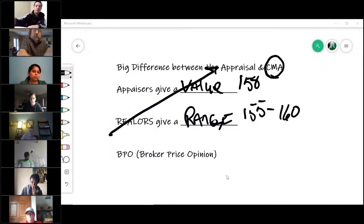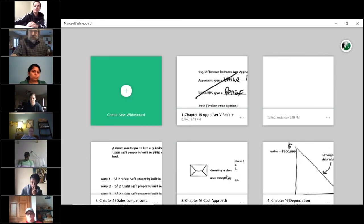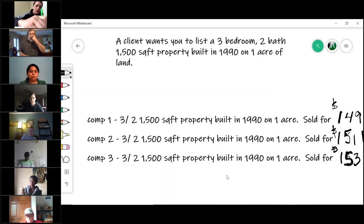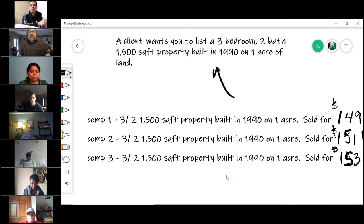When you do the sales comparison approach, your client calls you up and says, 'Hey, I want you to list my property. It's a three-bedroom, two-bath, 1500 square foot property built in 1990, and it sits on one acre of land.' You're like, 'Okay, I'll be there at five o'clock to talk to you about the listing.'